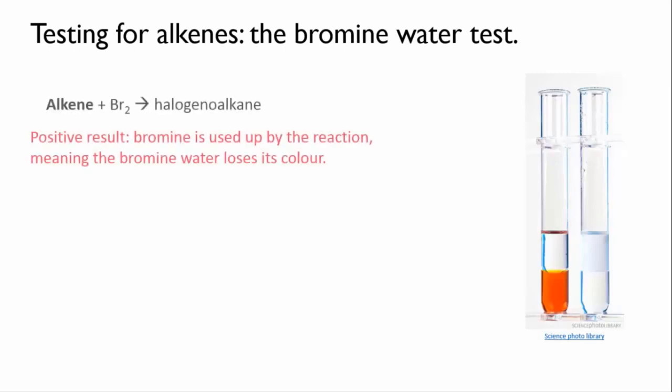This difference gives us the bromine water test. Bromine water is an aqueous solution of bromine which has the characteristic brown colour of bromine. When bromine water is added to an alkene, the less dense alkene floats on top of the bromine water and it doesn't mix with it. But if you shake the test tube to temporarily mix the two liquids, the brown colour completely disappears from the bromine water. This is because the bromine that was dissolved in the water has reacted with the alkene molecules in one of these addition reactions.